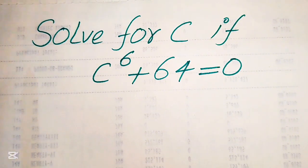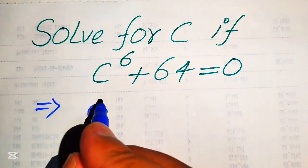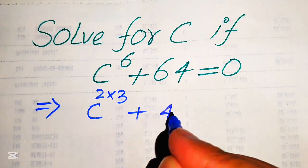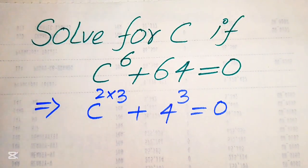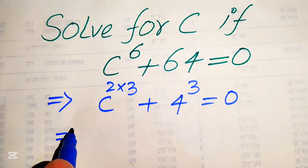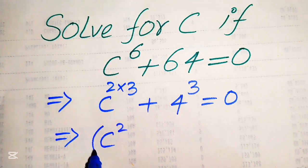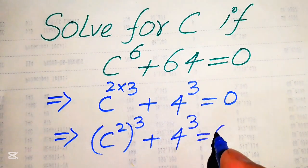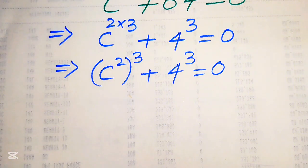First, we rewrite this equation by breaking the exponent of c. We write 6 as 2 times 3, so c⁶ becomes (c²)³, and we write 64 as 4 cubed. The equation becomes (c²)³ + 4³ = 0. In the next step we use the exponent law, moving the square term inside so it becomes (c²)³ + 4³ = 0.